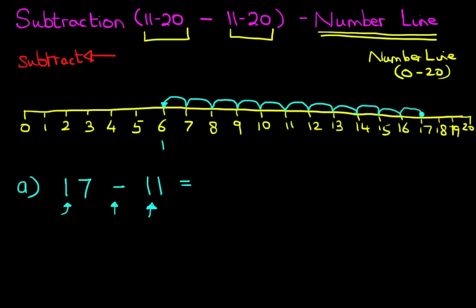What number have we landed on? We have landed on number 6. That is the answer. 17 minus 11 is 6. That was nice and easy, wasn't it?